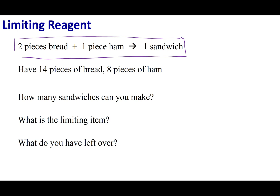I'm going to look into my pantry, and in my pantry I have 14 pieces of bread. I'll check my fridge and I have eight pieces of ham. So in your head, real quick — how many sandwiches can I make? Hopefully you came up with seven. Now tell me what was the limiting item — what ran out and stopped my sandwich production? Hopefully you said bread. And lastly, what do I have left over? Hopefully you determined that you have one piece of ham left over.